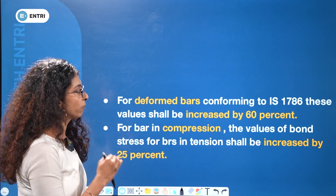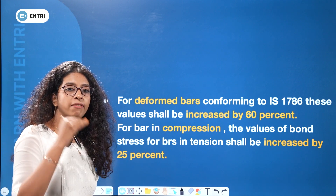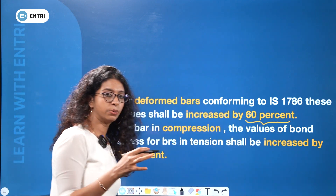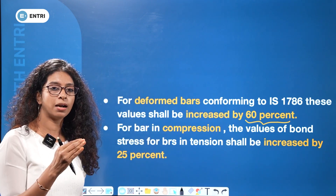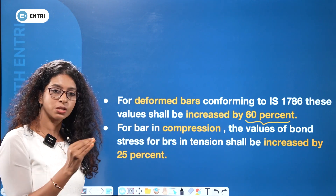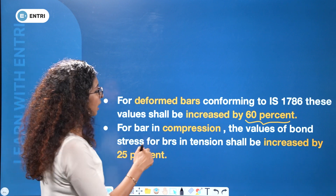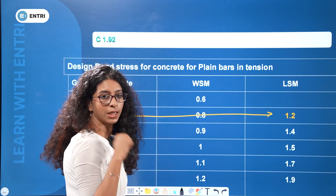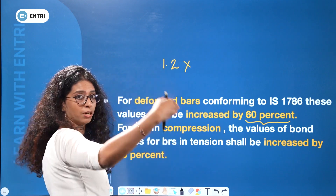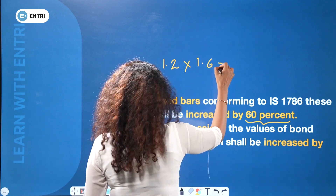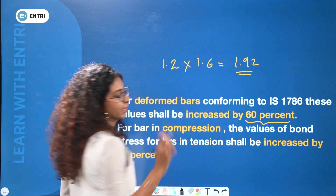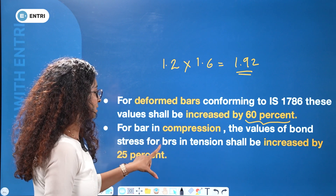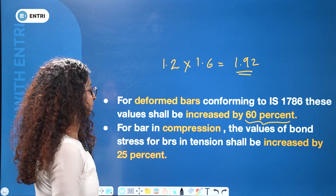Deformed bars conforming to IS 1786 — these values shall be increased by 60 percent. The base bond stress value for M20 is 1.2 N/mm². With 60% increment: 1.2 × 1.6 = 1.92 N/mm². For bars in compression, the bond stress values for bars in tension shall be further increased by 25 percent.